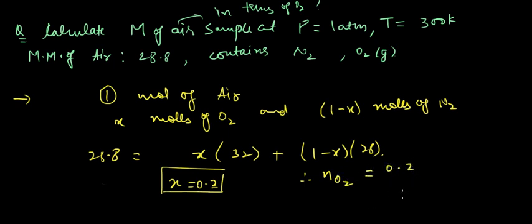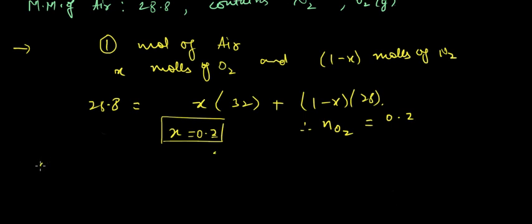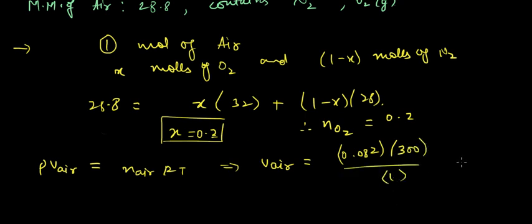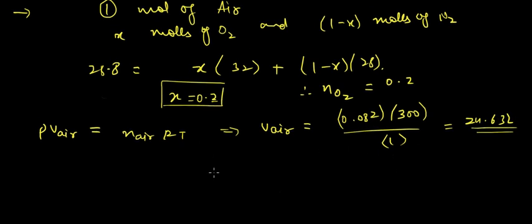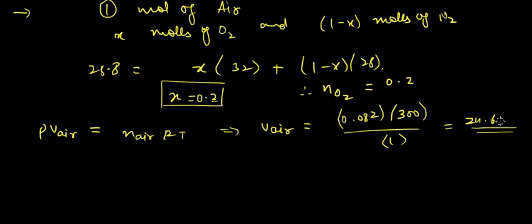Now again applying PV: volume of air equals n_air RT. So volume of air would be n_air equals 1, R is 0.082, temperature is 300 Kelvin, pressure here is 180 atm. So volume of air can be calculated as 0.1367 liters.